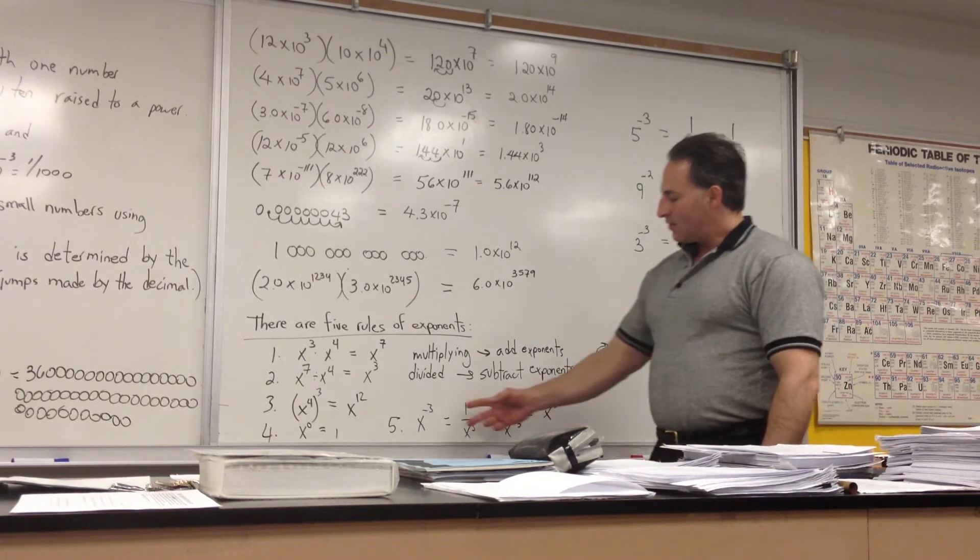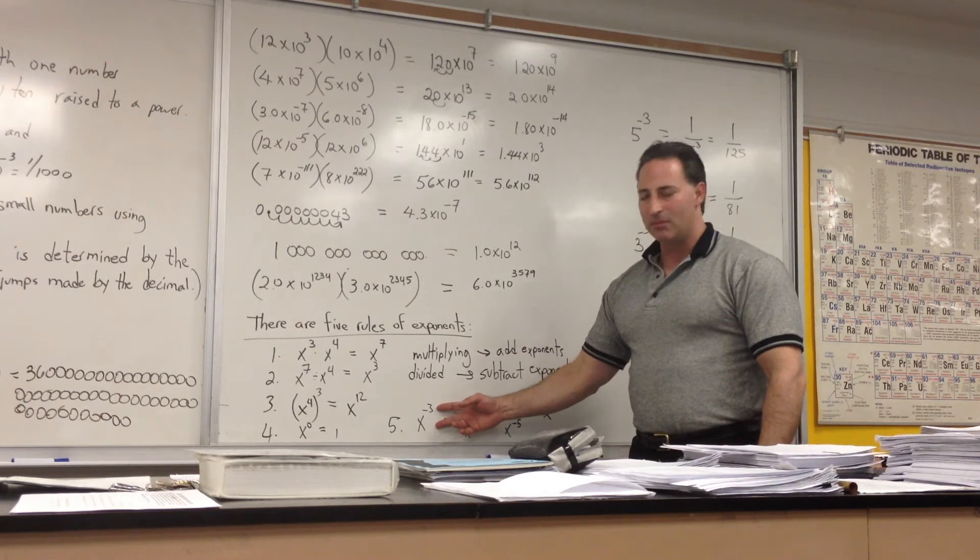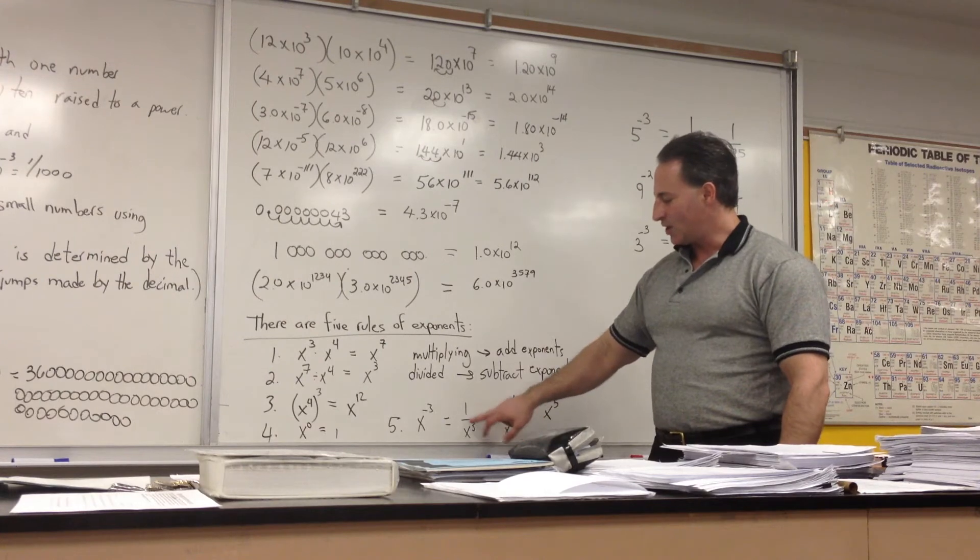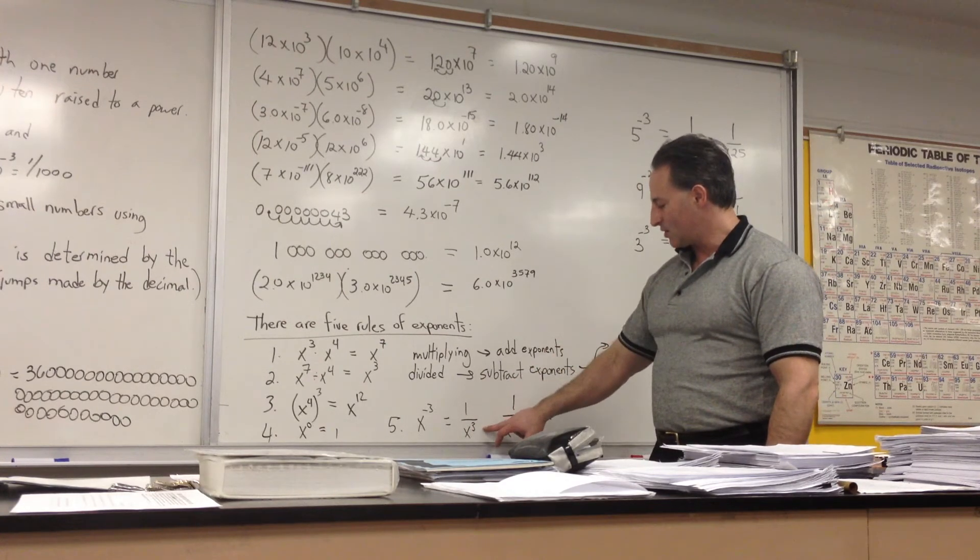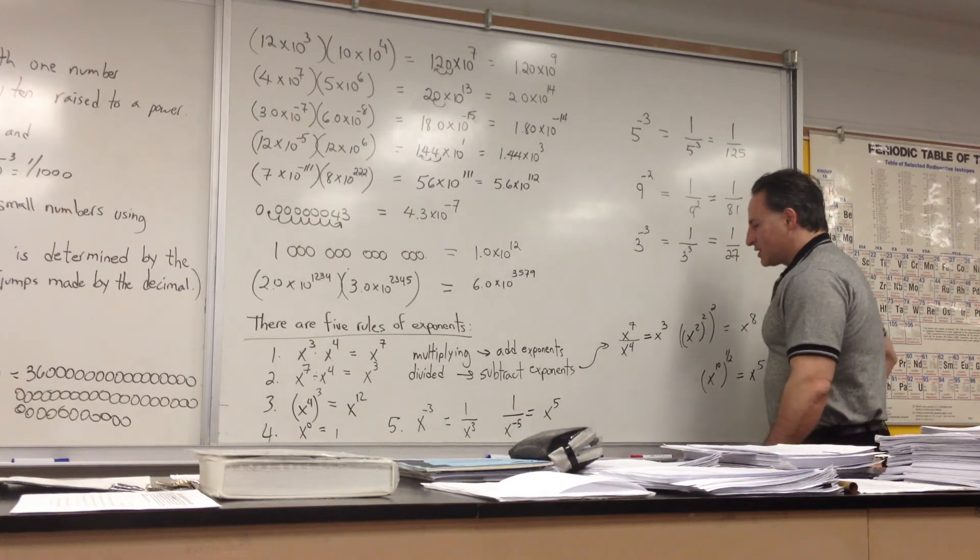Lastly, whenever you have an exponent that is negative, you can take the reciprocal of the number and the exponent will change sign. So x to the minus 3 becomes 1 over x to the 3. 1 over x to the minus 5 becomes x to the positive 5.